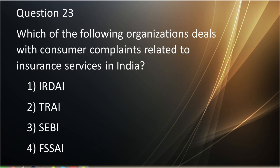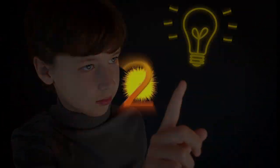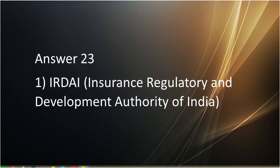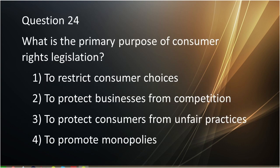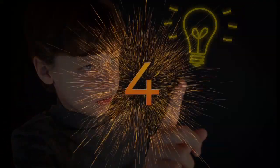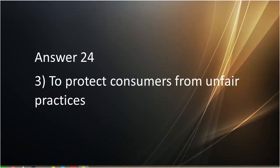Question number twenty-three: Which of the following organizations deals with consumer complaints related to insurance services in India? Question number twenty-four: What is the primary purpose of consumer rights legislation? First is to restrict consumer choices. Second is to protect businesses from competition. Third is to protect consumers from unfair practices. Fourth is to promote monopolies. Answer to question number twenty-four is to protect consumers from unfair practices.